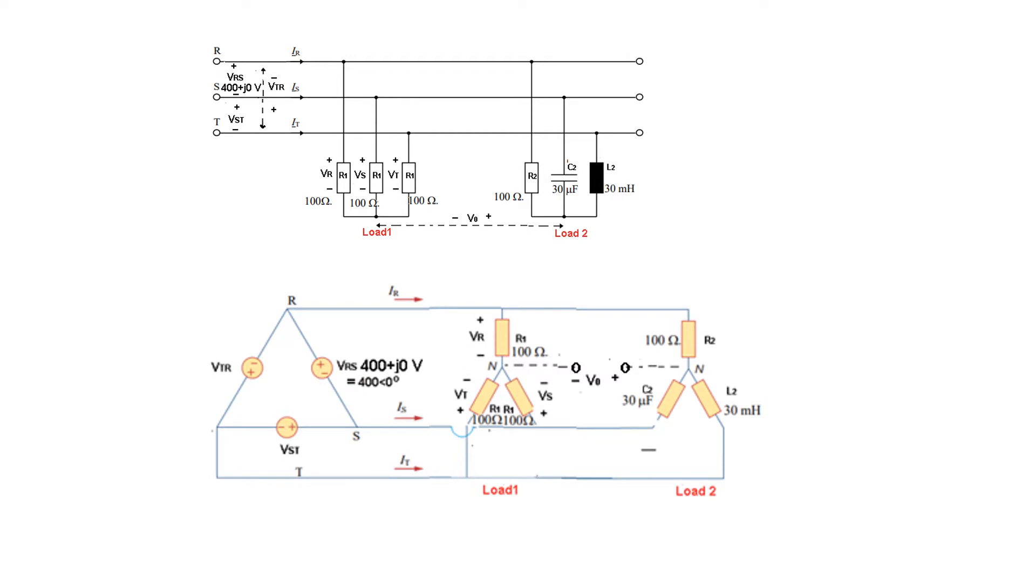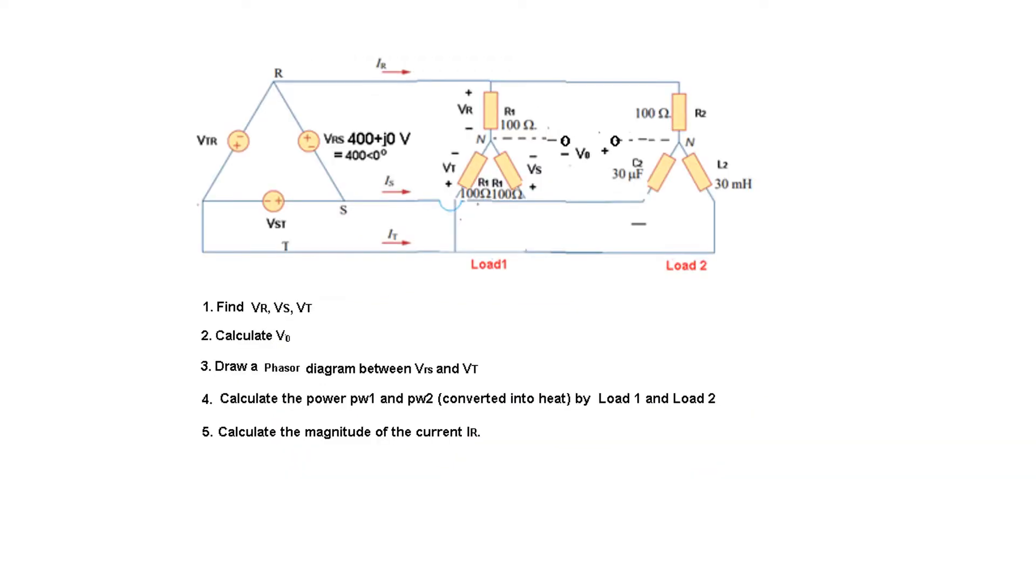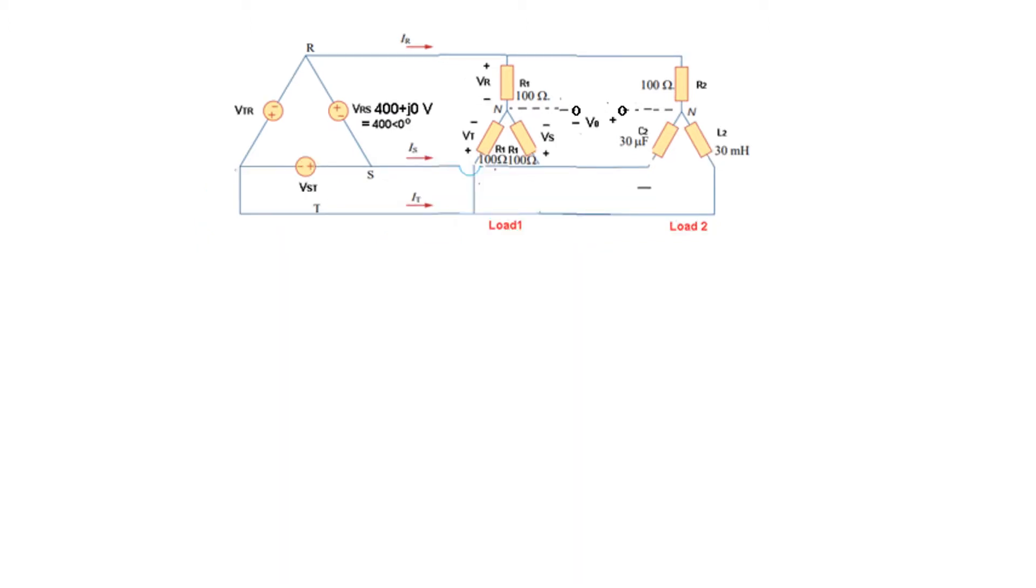The question is: first, find VR, VS, and VT, these three voltages. Calculate V naught, the voltage between the two neutral points. Draw a phasor diagram between VRS and VT. Calculate the power P1 and P2, the real power consumed by load 1 and load 2. Then find the magnitude of current IR.